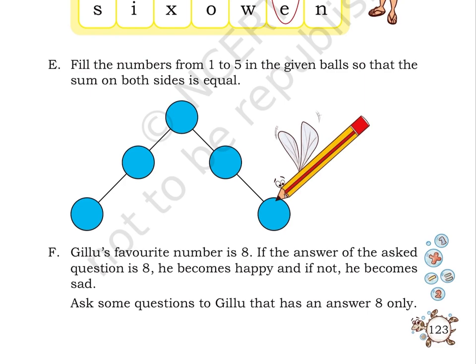Puzzle F: Gillu's favorite number is 8. If the answer of the asked question is 8, he becomes happy. And if not, he becomes sad. Ask some questions to Gillu that has an answer 8 only.